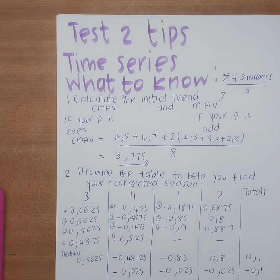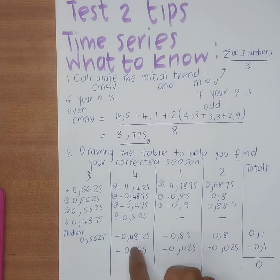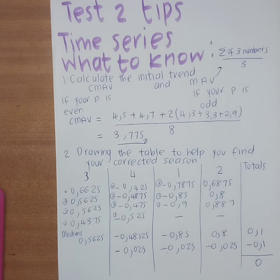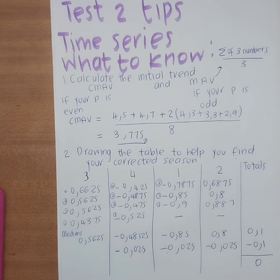When you subtract the corrected season from the seasonal estimate, the answer you get is your corrected season. Remember the two methods available: method of the means and method of the medians.